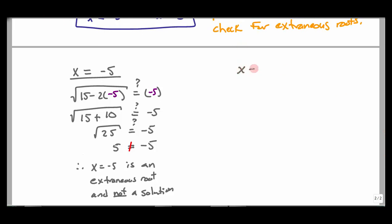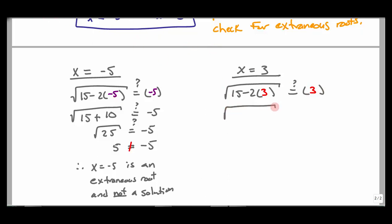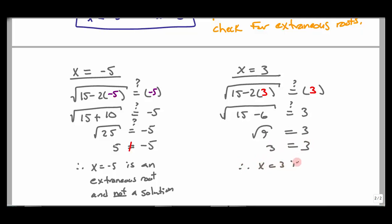Our graph from above verifies this, but this is how we check by hand. Now checking x = 3: plugging 3 into the original gives square root of (15 − 6) = square root of 9. The square root of 9 does equal 3, so 3 = 3. Therefore x = 3 is a solution. We saw that from the graph and from working the problem by hand.